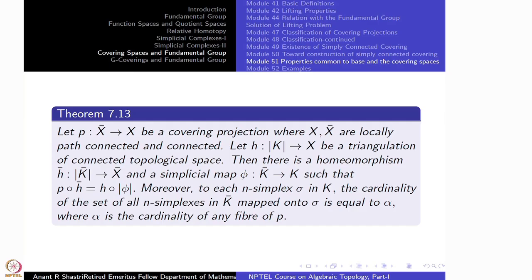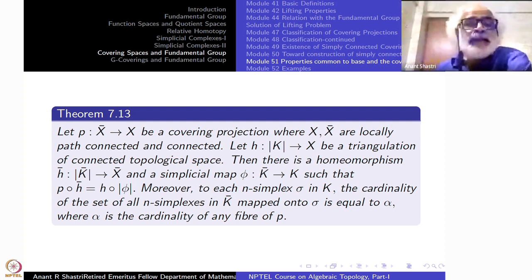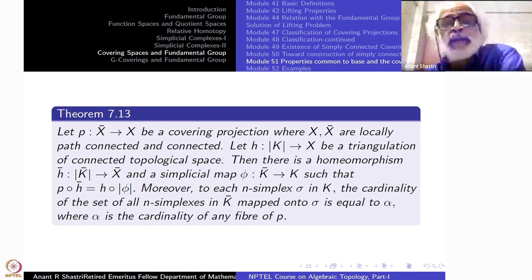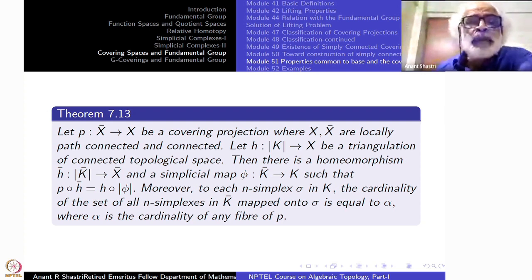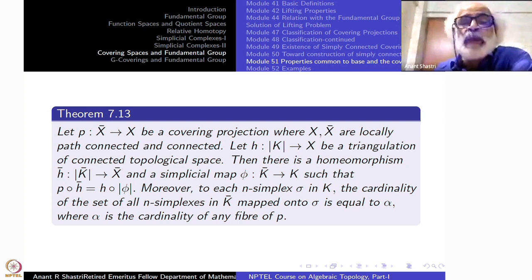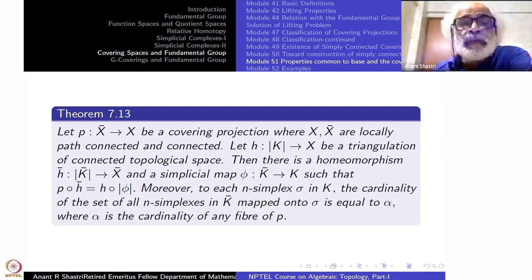Now we come to the main topic of today. Let P: X̄ → X be a covering projection, with X and X̄ locally path connected and connected. Let H: |K| → X be a triangulation of the connected topological space X. Then for every covering X̄, there is a triangulation H̄: |K̄| → X̄ and a simplicial map φ: K̄ → K such that the diagram is commutative.